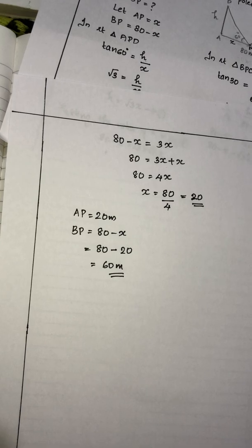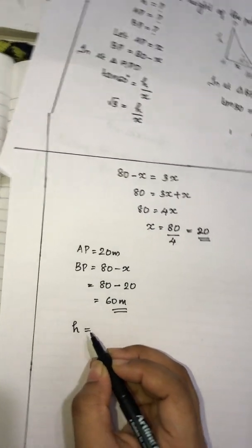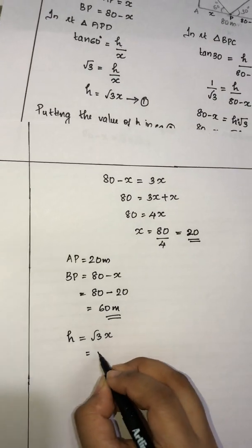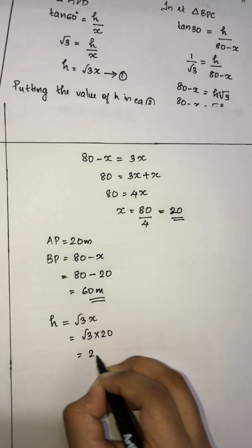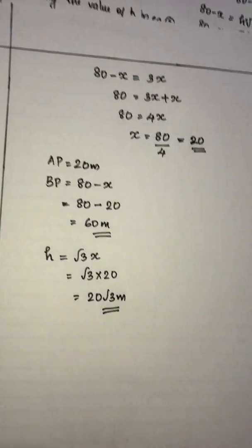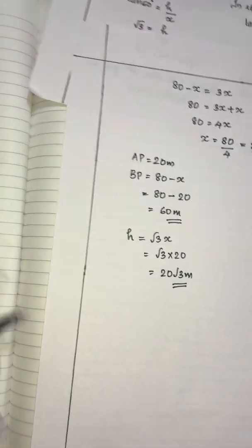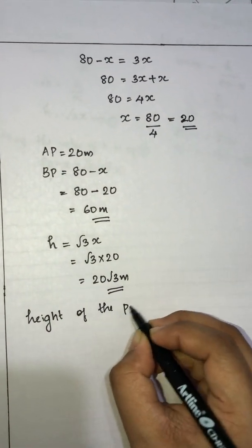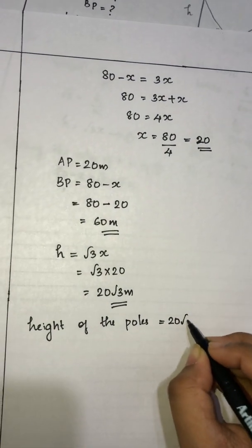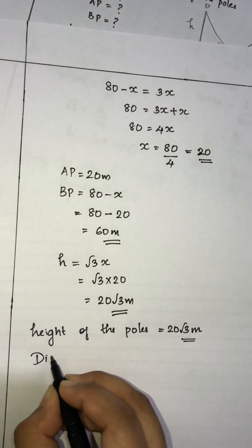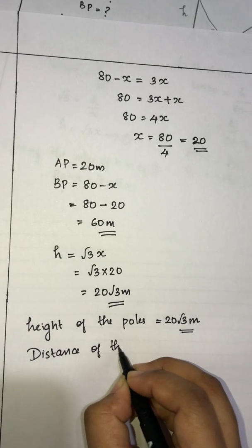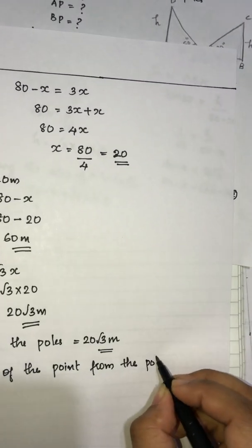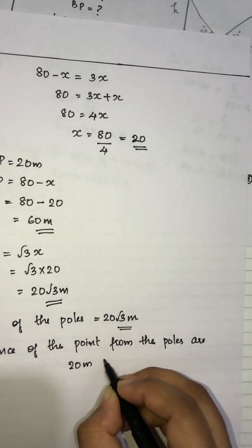Next, h is equal to root 3 into x, which is root 3 into 20, giving 20 root 3 meters. So the height of the poles is 20 root 3 meters, and the distances of the point from the poles are 20 meters and 60 meters.